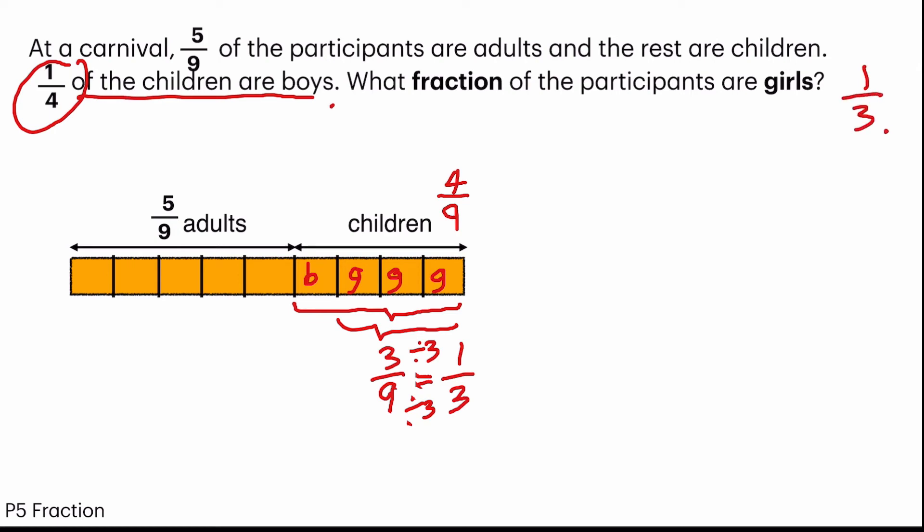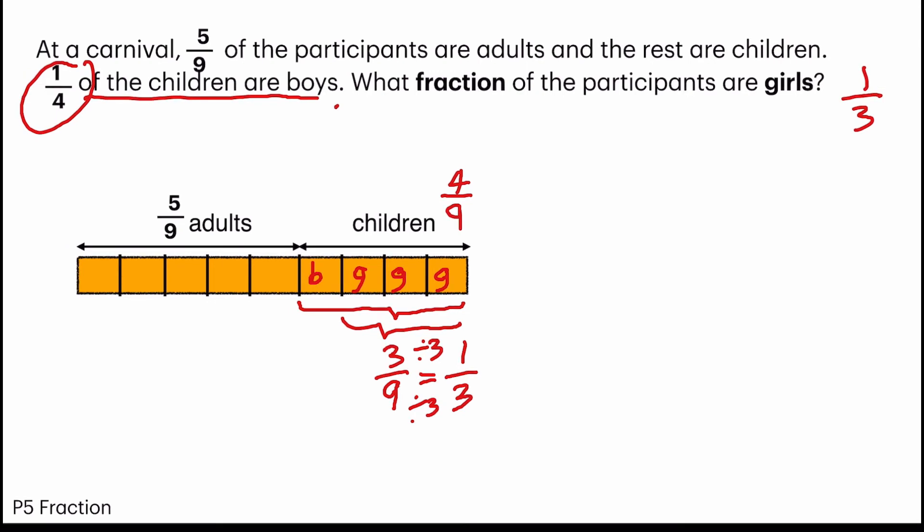This is solving the question using the model drawing. If you don't want to use the model, you can use multiplication or fraction. If they say 1 quarter of the children are boys, that means 3 quarter of the children are girls.